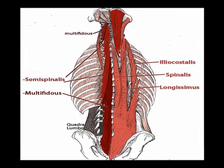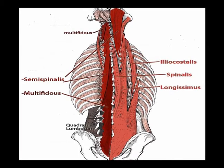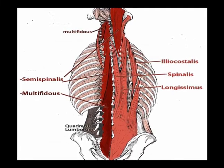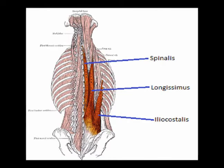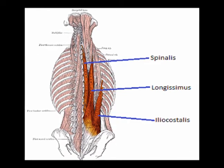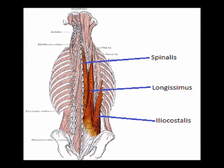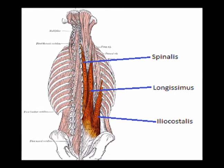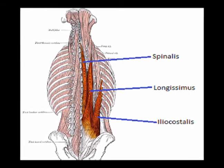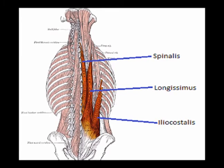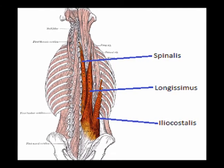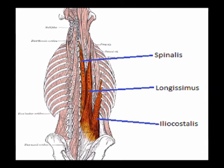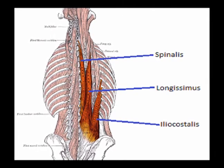These three muscles are long and thin and very powerful. They run superior on each side of the spine. The spinalis is the most medial and is the smallest of the three. The longissimus is the largest of the three muscles and is located in between the spinalis and the iliocostalis. The iliocostalis is the most lateral and it inserts onto the angles of the ribs.